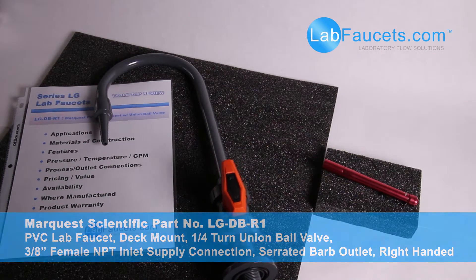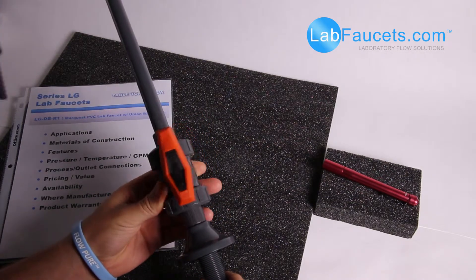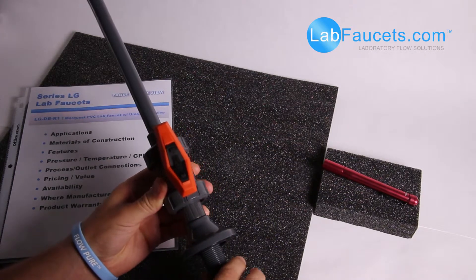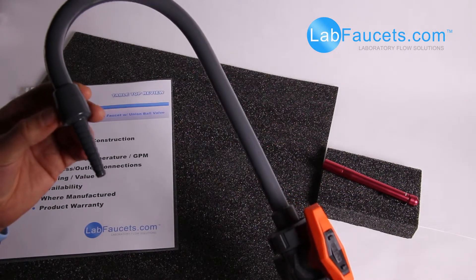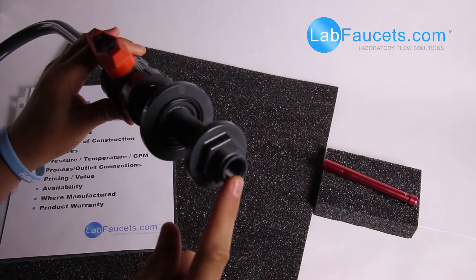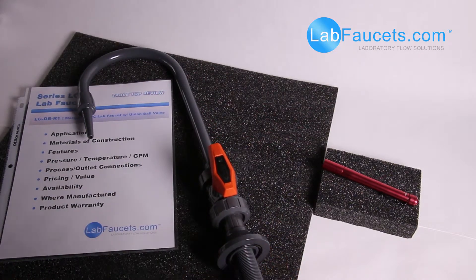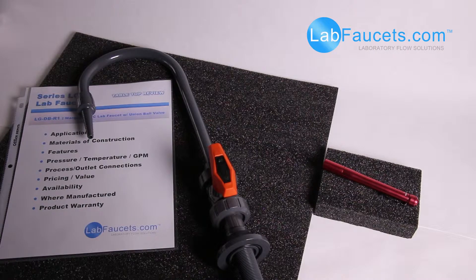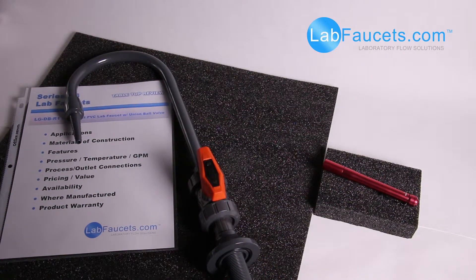This is deck mounted with a quarter turn union ball valve, a serrated barb tip, and a 3/8 female NPT inlet supply connection. Applications include high purity water, chemical dispensing. Materials of construction on this faucet are PVC and Viton.